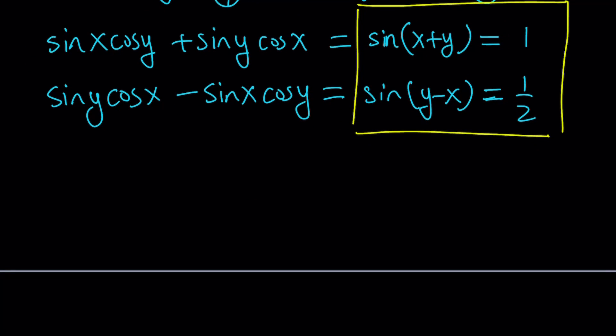So the first one gives me x plus y equals pi over two. As you know, the sine of pi over two is one. And on the unit circle, if you think about it, that's the only angle between zero and two pi whose sine is equal to one.